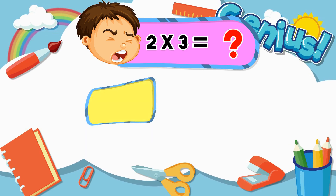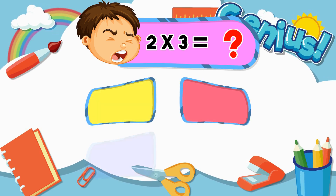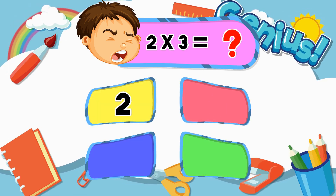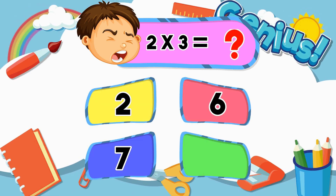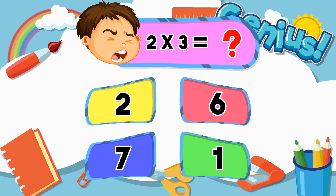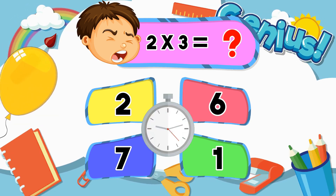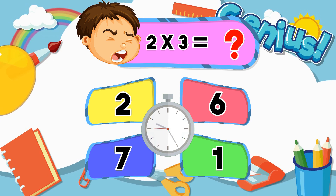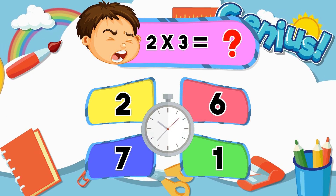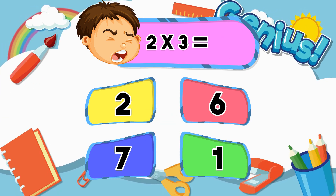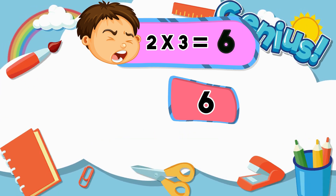What is two times three? Two. Six. Seven. One. Six.